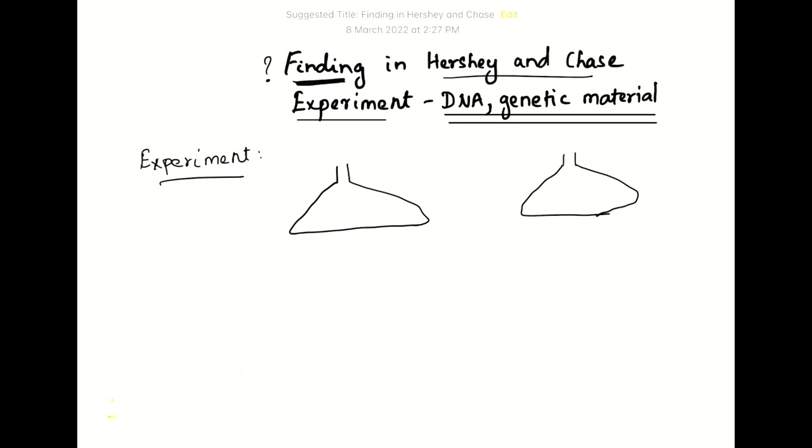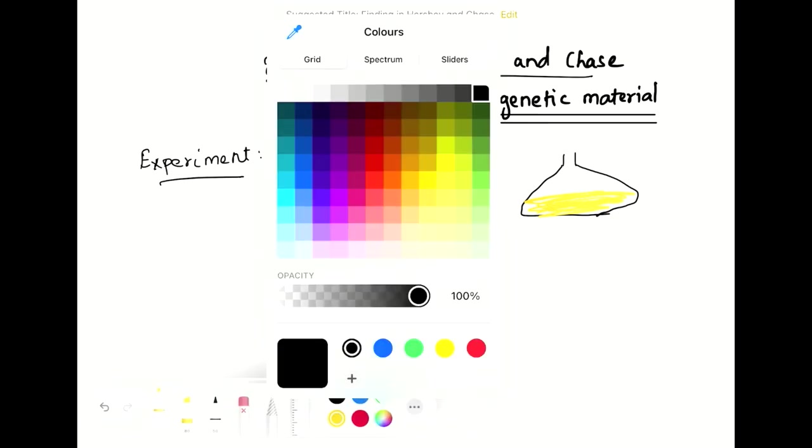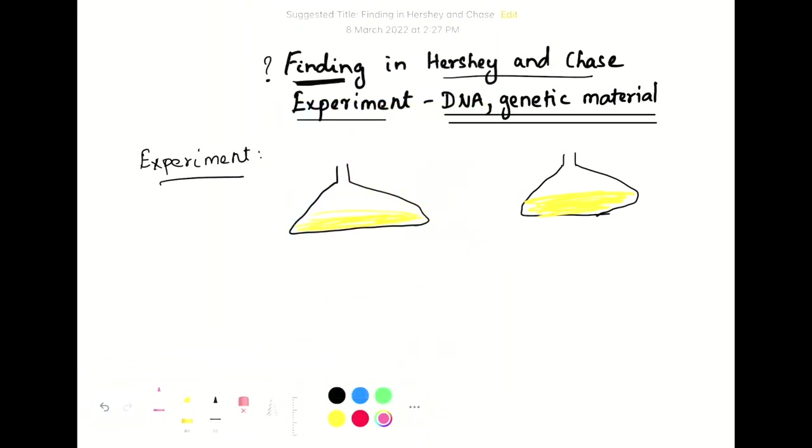The nutrient medium had radioisotope sulfur in one flask and radioisotope phosphorus in another flask.